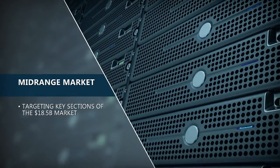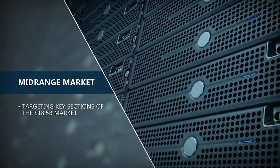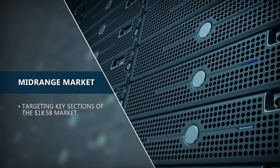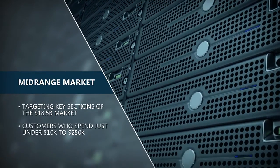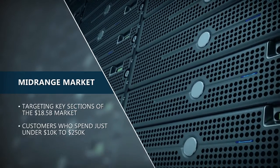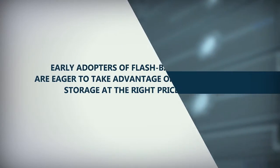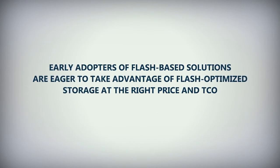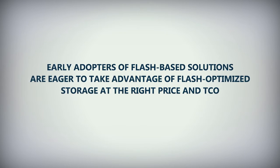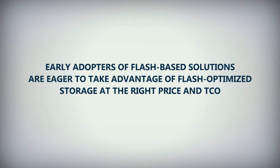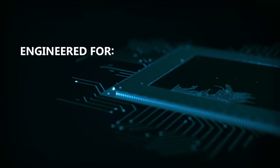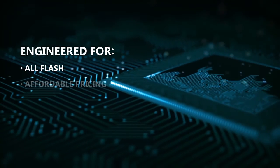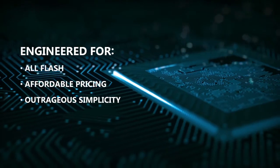Despite EMC's legacy of mid-range market leadership, we still see a lot of opportunity within the $18.5 billion mid-range storage market. In particular, customers who spend just under $10,000 to $250,000, and have generally been early adopters of flash-based solutions, are eager to take advantage of flash-optimized storage at the right price in TCO. It's within this context that we introduce Unity, a mid-range storage platform engineered from the ground up to meet the market's demands for all flash, affordable pricing, outrageous simplicity, and modern design.